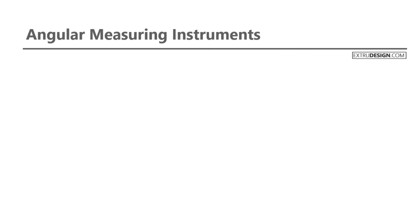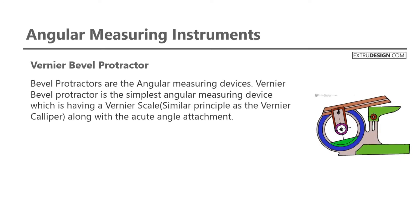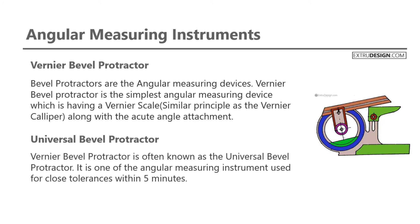Let us discuss a few angular measuring instruments in some detail. The first one is the Vernier Bevel Protractor. Bevel Protractors are angular measuring devices. The Vernier Bevel Protractor is the simplest angular measuring device with a Vernier scale, having a similar working principle as the Vernier caliper, along with an acute angle attachment. Check the schematic diagram of the Vernier Bevel Protractor. This instrument is also known as the Universal Bevel Protractor, and is used for close tolerances within 5 minutes.